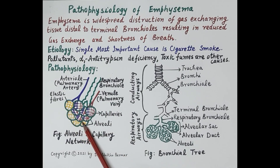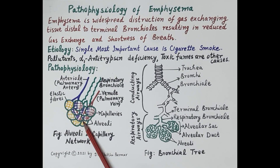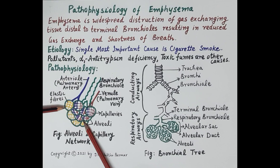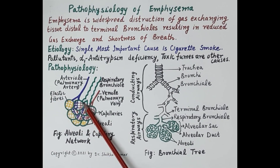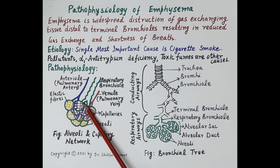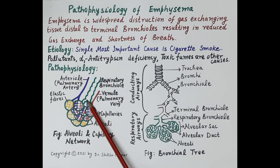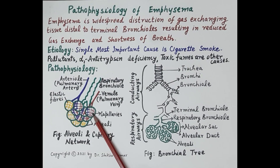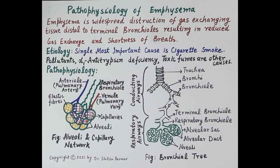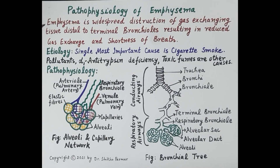The wall of the alveoli is made up of a single layer of squamous epithelial cells, and these alveoli are supported by elastic fibers. All the respiratory passages — the alveolar duct and the respiratory bronchiole — are supported by elastic connective tissue. The alveoli are surrounded by a network of capillaries for the exchange of carbon dioxide and oxygen.